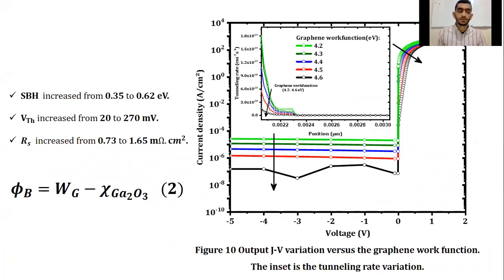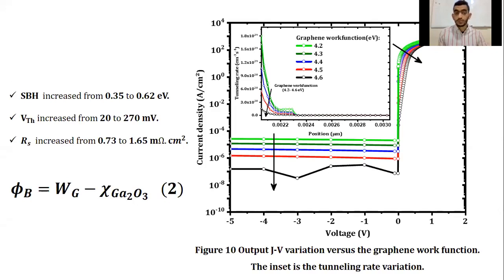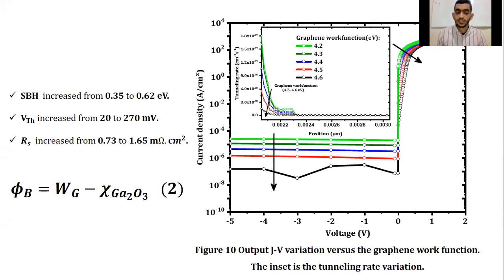Another important parameter is the graphene work function. When graphene work function increased, Schottky barrier height increased from 0.35 to 0.62 eV, threshold voltage increased from 20 to 270 mV, and series resistance increased from 0.73 to 1.65 milliohm centimeter squared. In addition, a decrease in leakage current was observed, as presented in figure 10. The increase in Schottky barrier height and threshold voltage is interpreted according to the Schottky-Mott model, as presented in equation 2. The increase in series resistance and decrease in leakage current are related to a decrease in tunneling rate when graphene work function increased, as presented in the inset of figure 10.